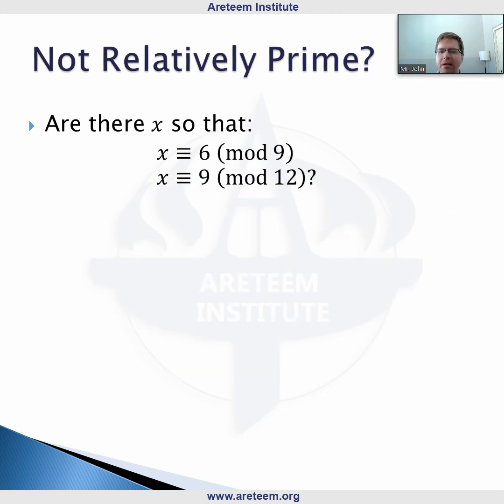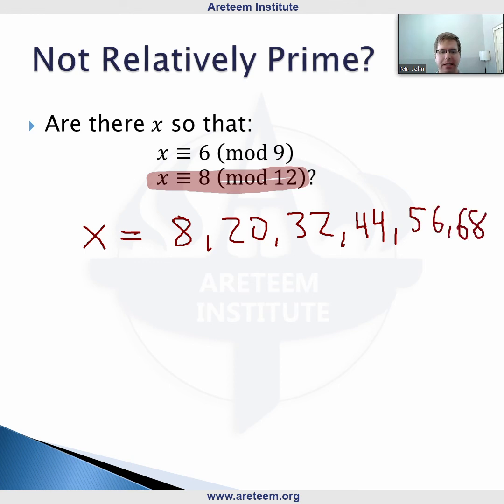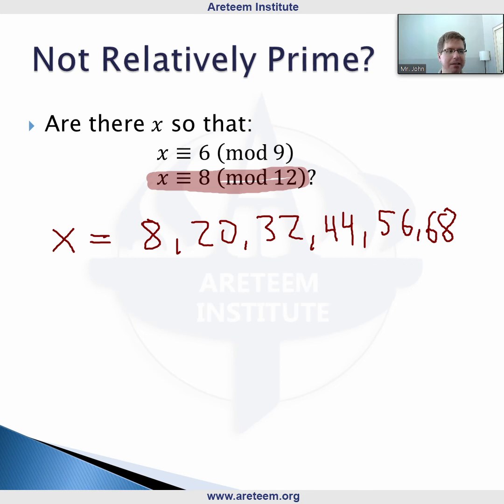Let's end with one final example. Still mod 9 and mod 12, but one that actually doesn't work. Let's do our same strategy. Let's look at 8 mod 12. Our candidates for x are 8, 20, 32, 44, 56, 68. We're adding 12 each time.